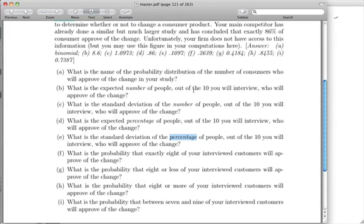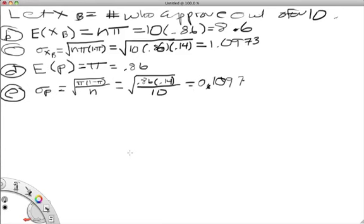Let's go on to part F. Part F reads what is the probability that exactly 8 of your interviewed customers will approve of the change? So I'm going to translate this into symbols and I'll first work it with the formula. So what is the probability that exactly 8 approved? So that's going to be what is the chance that X_B is equal to 8? Well, there are several ways to find this. One is to go back to the formula. So let's do that.